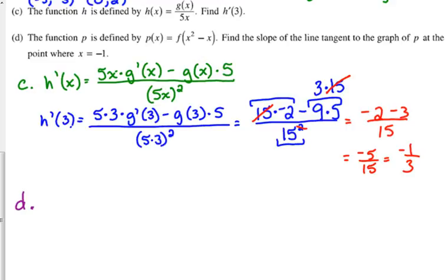D says the function P is defined as f of x squared minus x. Find the slope of the line tangent to the graph of P at the point where x equals negative 1. So, when you read slope of the tangent line, what do you think? Derivative. So, we need to take the derivative of P, P prime of x. Well, P is defined as another function. Here's a chain rule. So, we've got to do f prime of x squared minus x times the derivative of the inside, 2x minus 1.